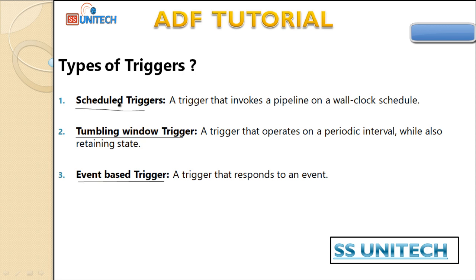The scheduled trigger invokes the pipeline on a wall clock schedule. For example, if we want to execute our pipeline on a daily basis at six o'clock in the morning, we can schedule that trigger on the pipeline and it will execute every day at six o'clock.